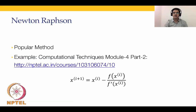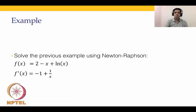Newton-Raphson's technique is popular because it has one of the fastest rates of convergence amongst the various methods used for solving nonlinear algebraic equations. Let's look at how we will use Newton-Raphson's to solve the example we have been covering in this module: f(x) is given by 2 minus x plus ln(x), and we need to find the solution to this nonlinear equation.